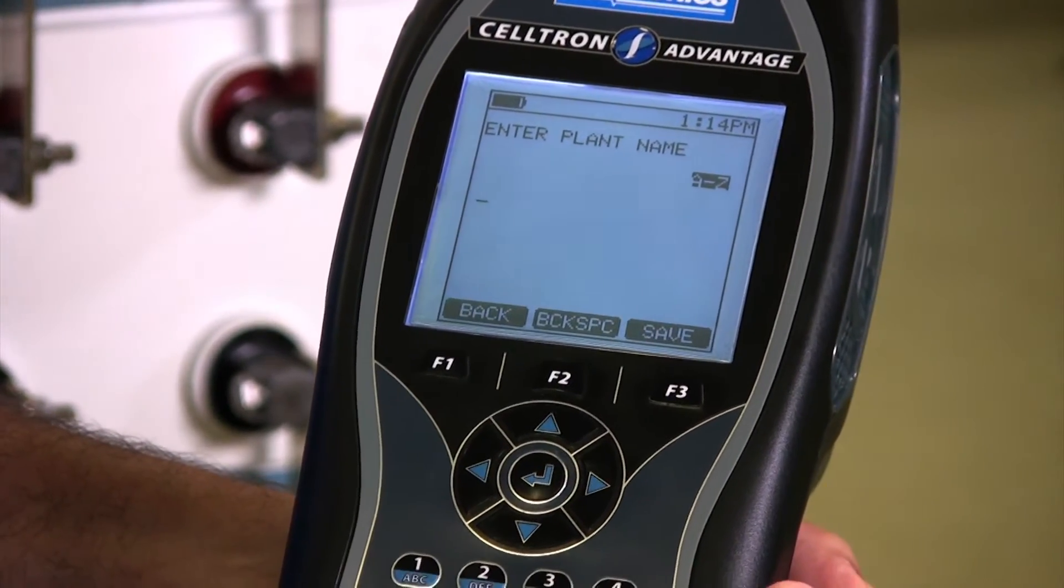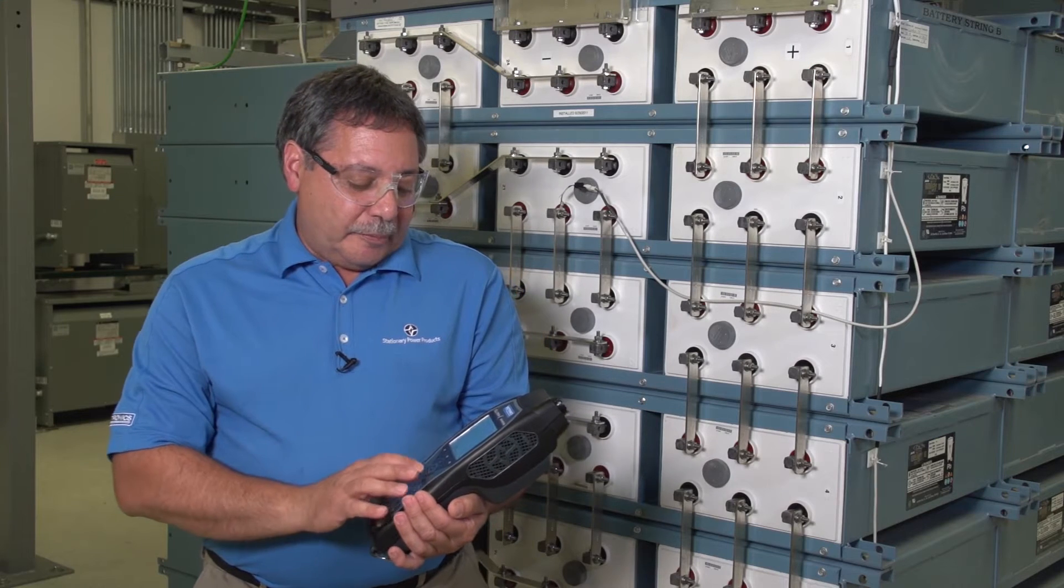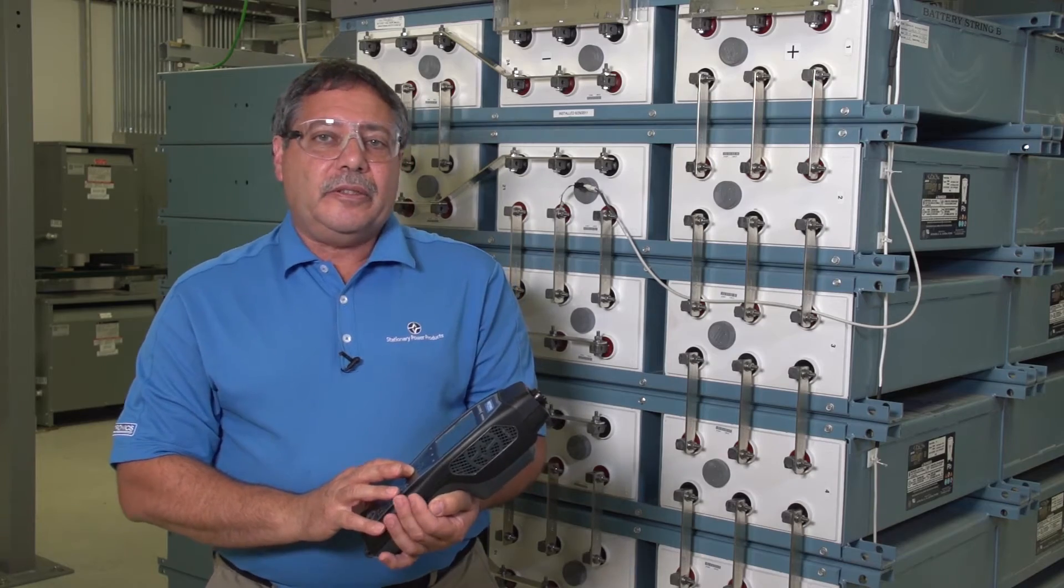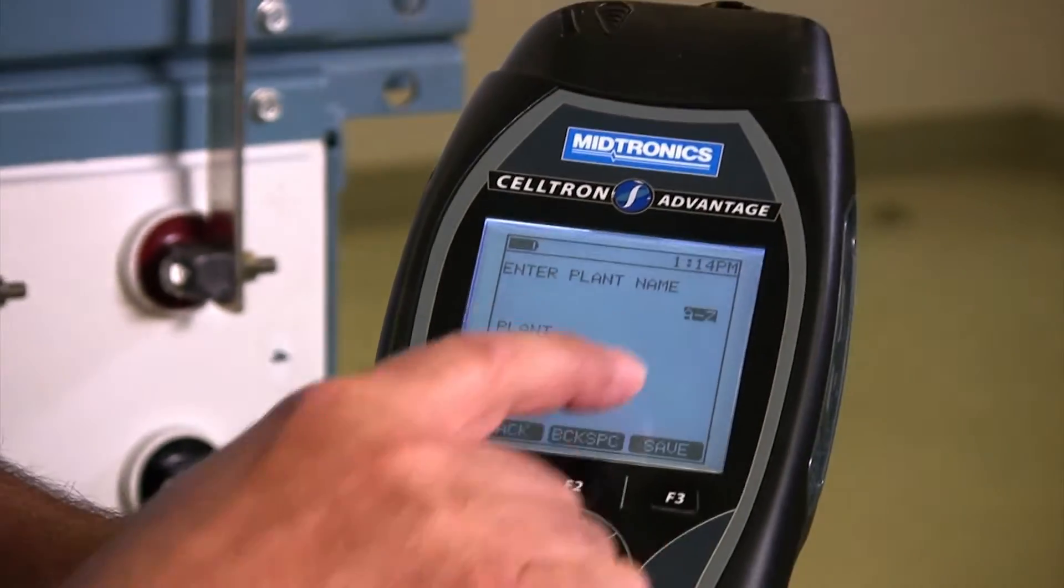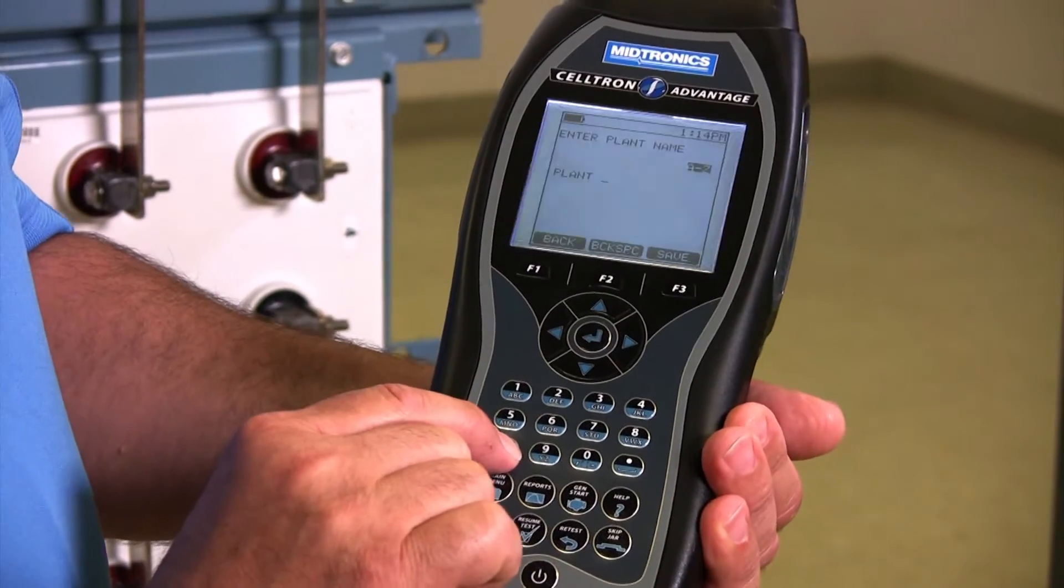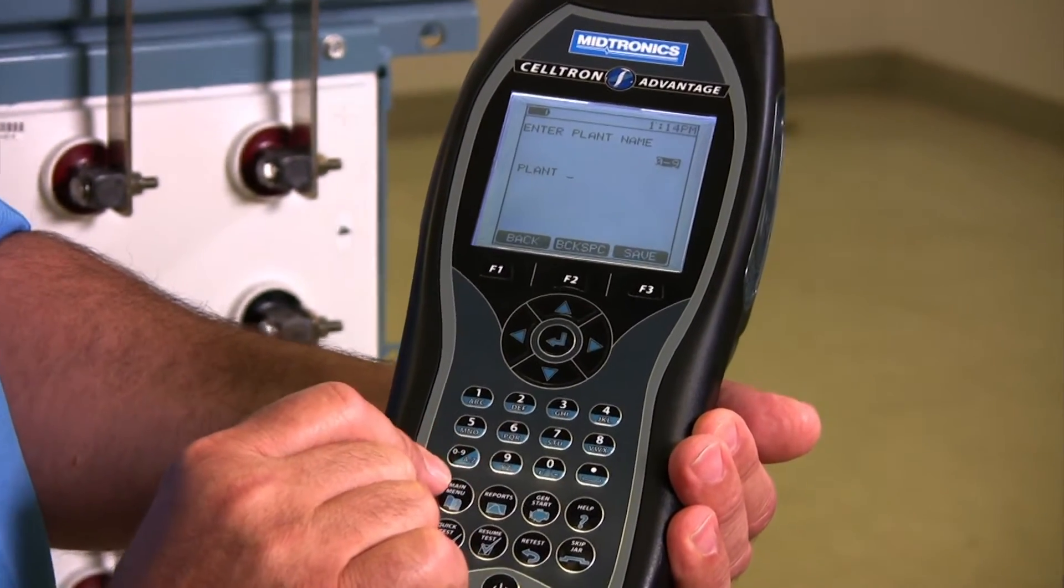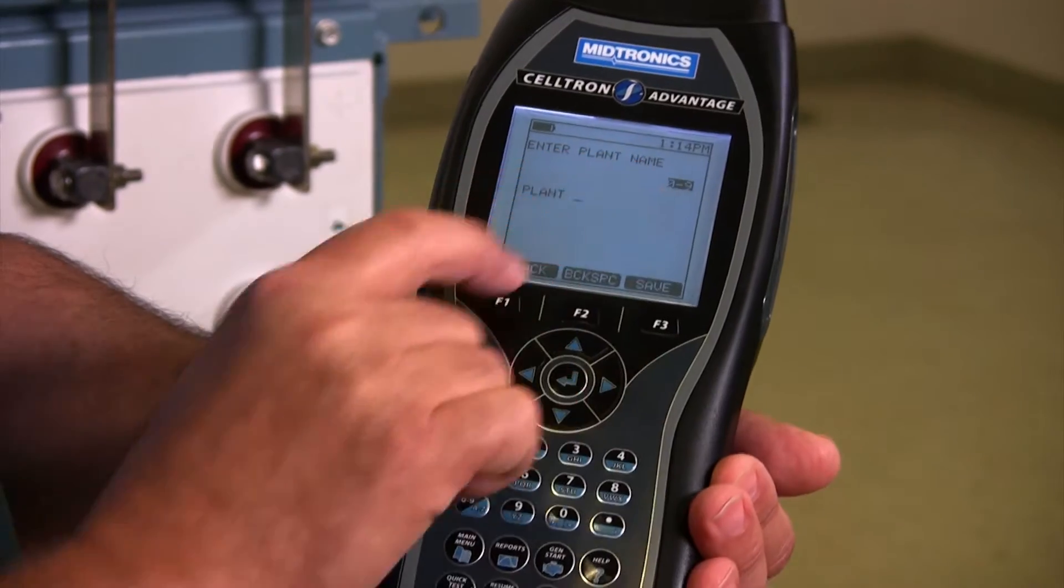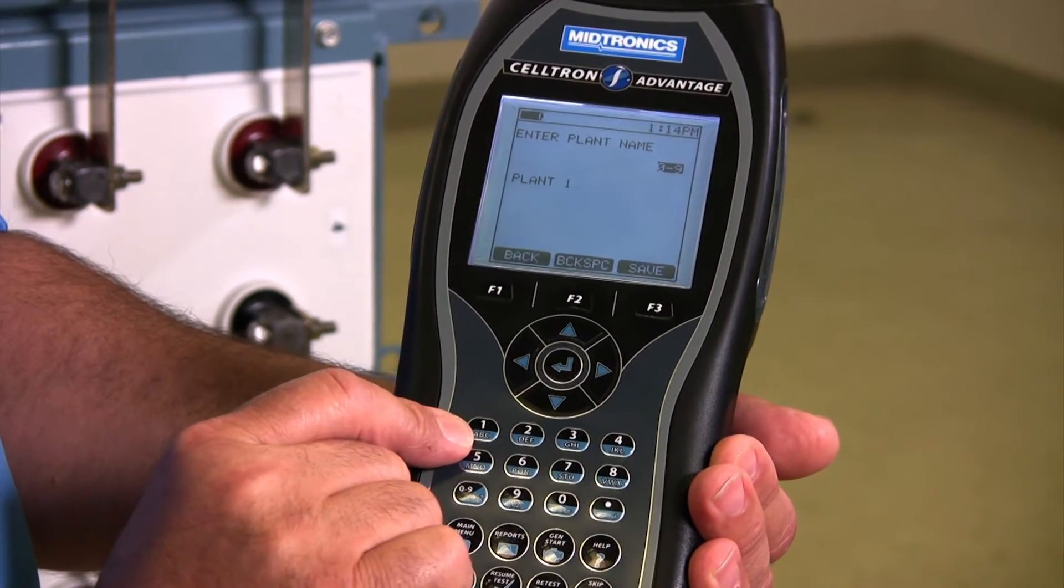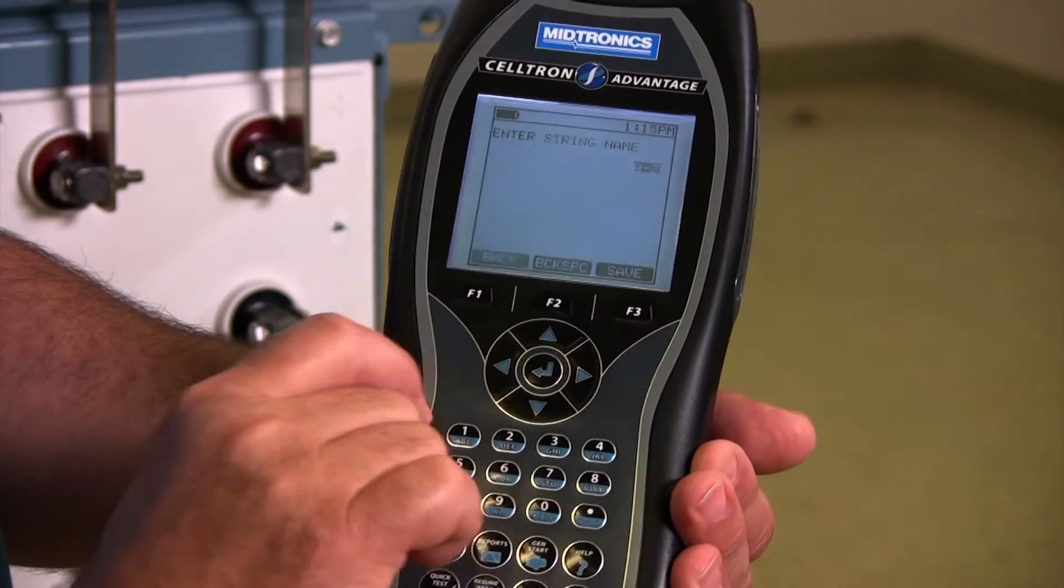Now I'm going to put in a plant name. That plant name can be as easy as plant one or plant A. It's showing me that I'm using the letters. When I hit that key it toggles me now to numbers, so I hit that and now I can put in a one, and then I'm going to save that.